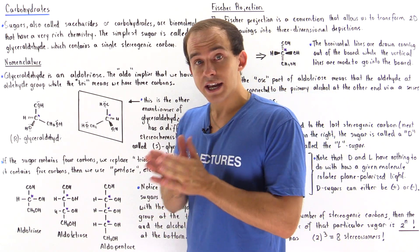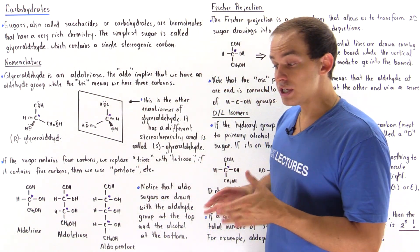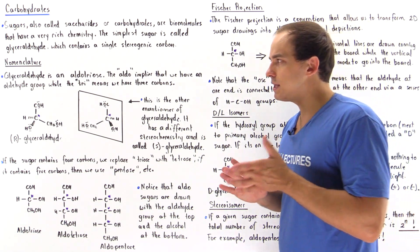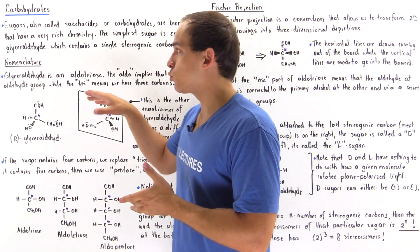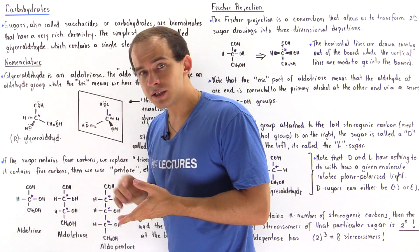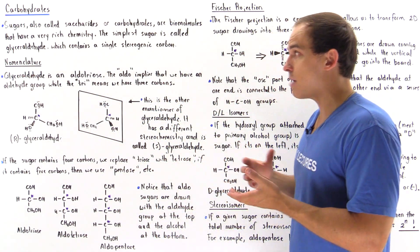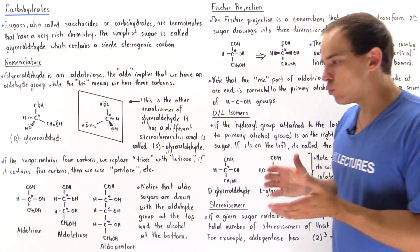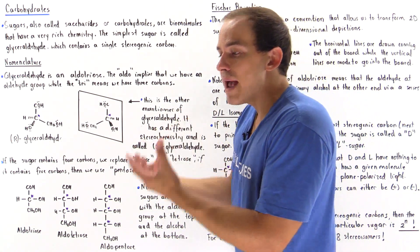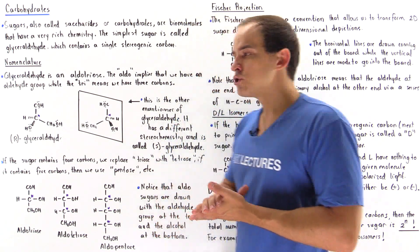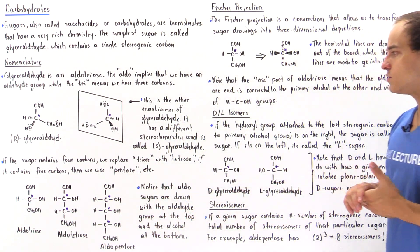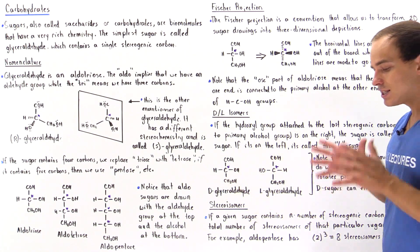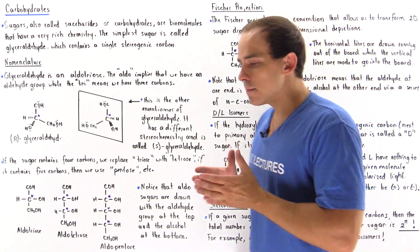So one role played by sugar molecules is to store energy. In this lecture, we're going to begin our discussion on sugars. We're going to focus on the nomenclature — the way that we name our sugar molecules — we're going to discuss the Fischer projection, the way that we depict the three-dimensional structure of our sugar molecules, and we're also going to discuss the DL isomers and see how to calculate the total number of stereoisomers in any given sugar molecule.